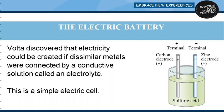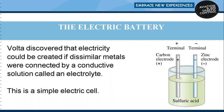The electrolyte is a solution of sulfuric acid. A battery transforms chemical energy into electrical energy. Chemical reactions within the cell create a potential difference between the terminals by slowly dissolving them. This potential difference can be maintained even if a current is kept flowing, until one or the other terminal is completely dissolved into the electrolyte.